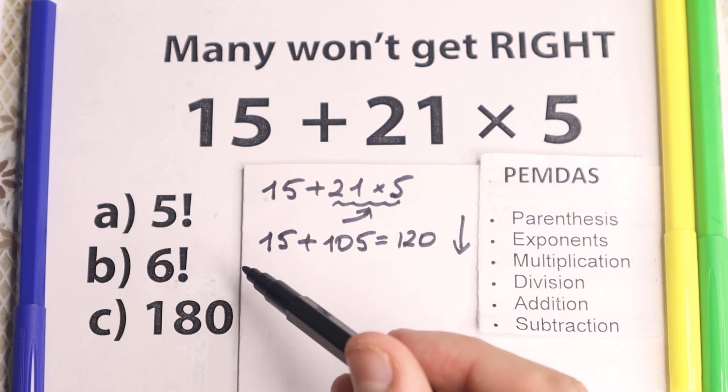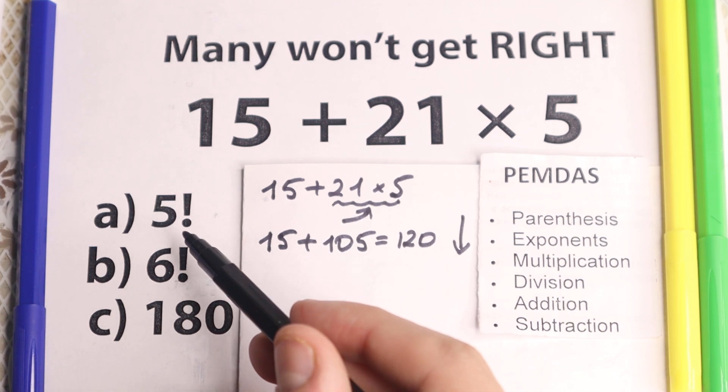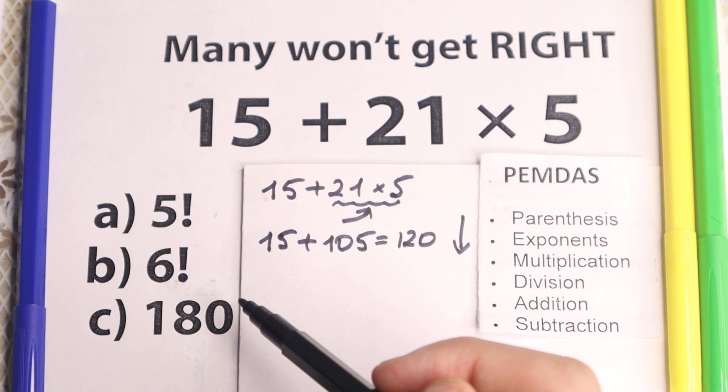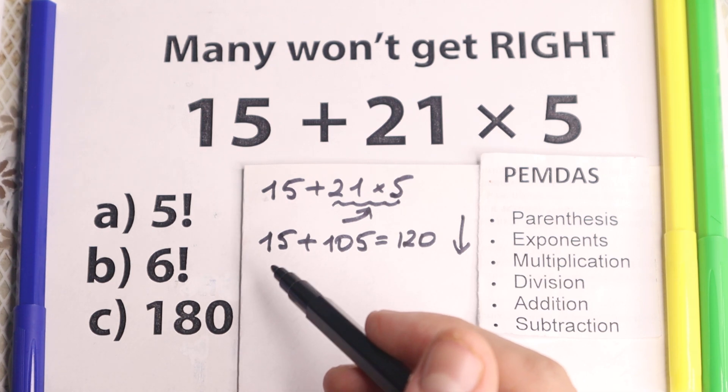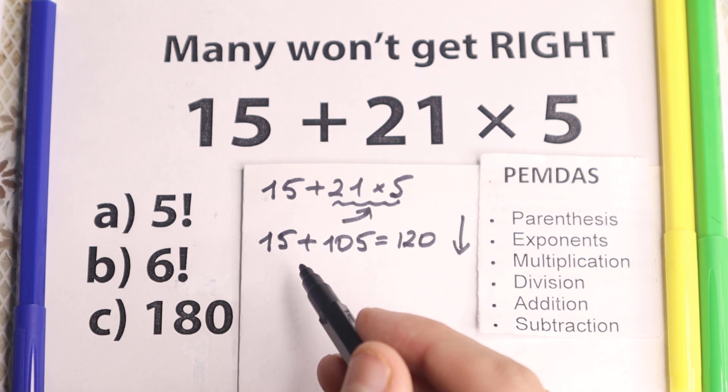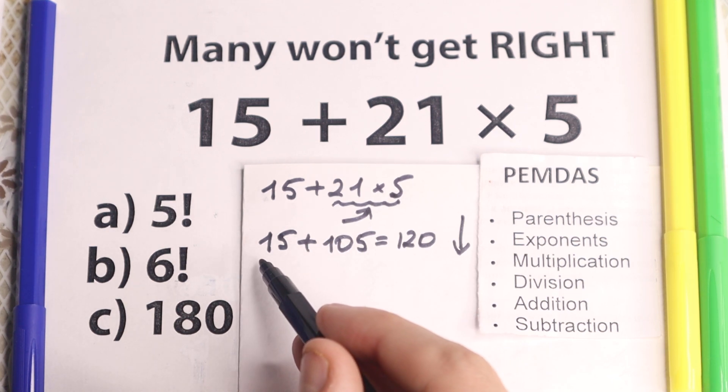But if we look to our option, we don't have this, we have like 5 factorial, 6 factorial, 180. And a lot of students find a really tricky moment right here, because they say okay, 120, but we don't have this option.